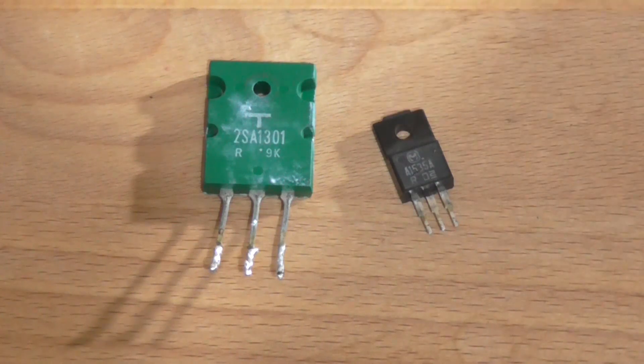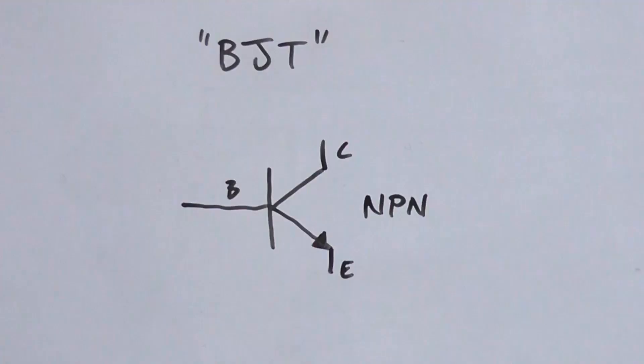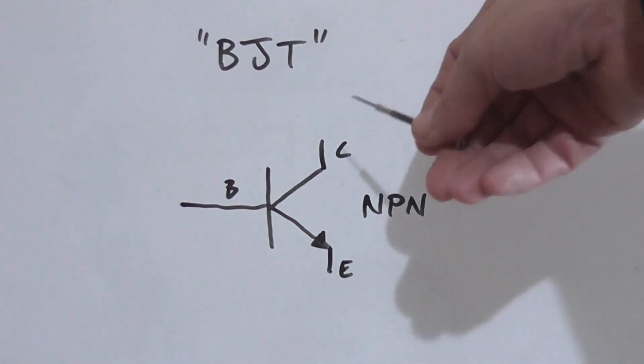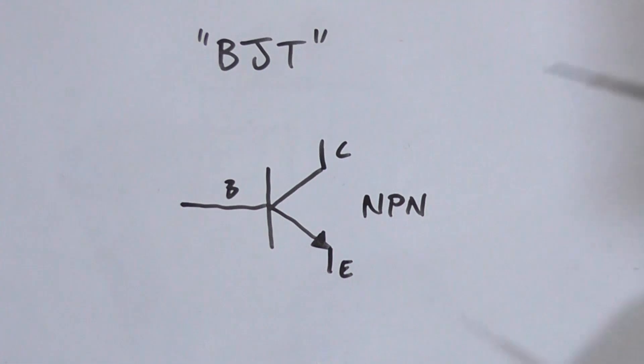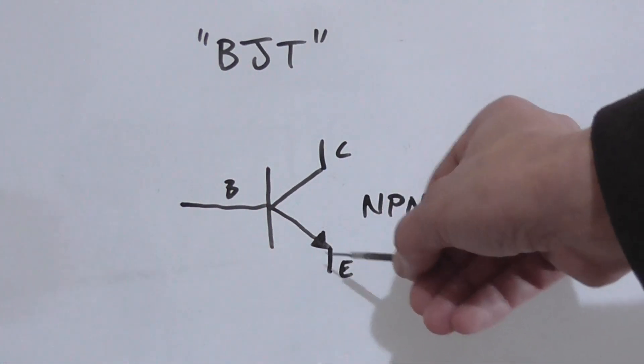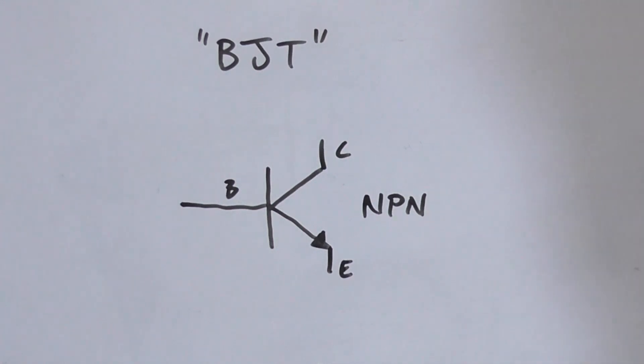So let's look at an equivalent schematic symbol for a BJT. Here on my whiteboard is a schematic symbol. We've got in this case a PNP. We've got a base, a collector, and emitter, and we see an arrow pointing out of the emitter on the PNP.